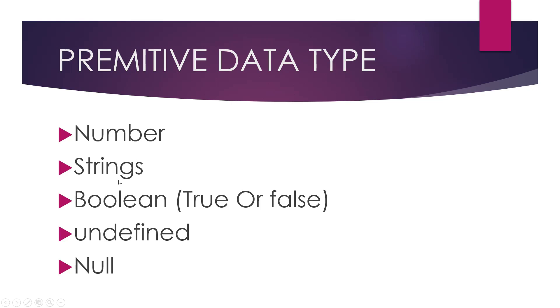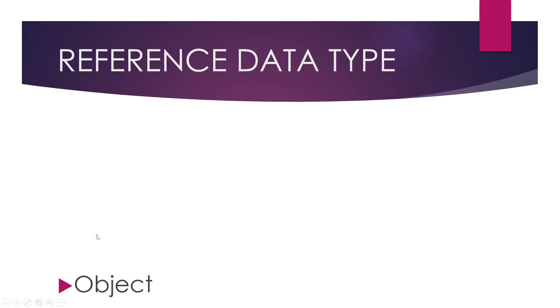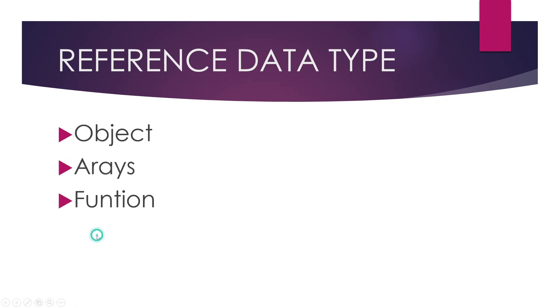In the previous video we learned about primitive data types — there are five types and we completed that in one video. Today we are going to cover reference data types practically. There are around two to three reference data types: object, arrays, and functions. Since all three are a bit bigger, I will make three separate parts. Today we are going to start with arrays.